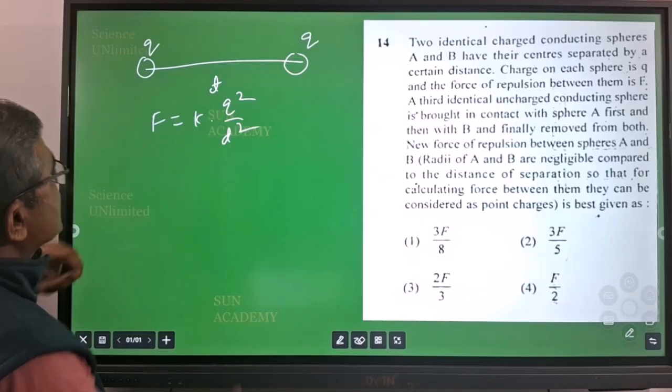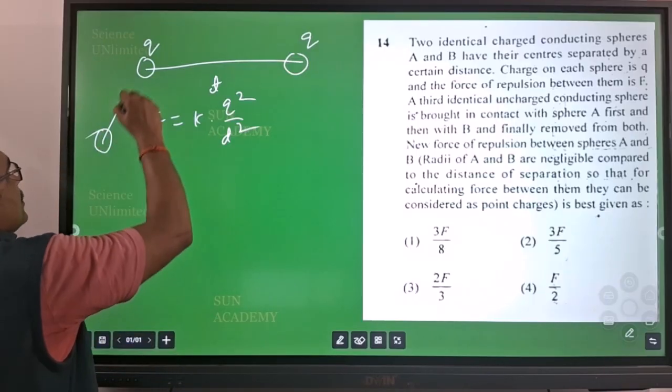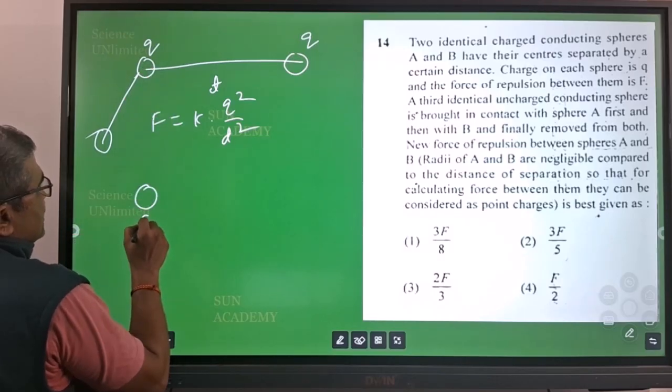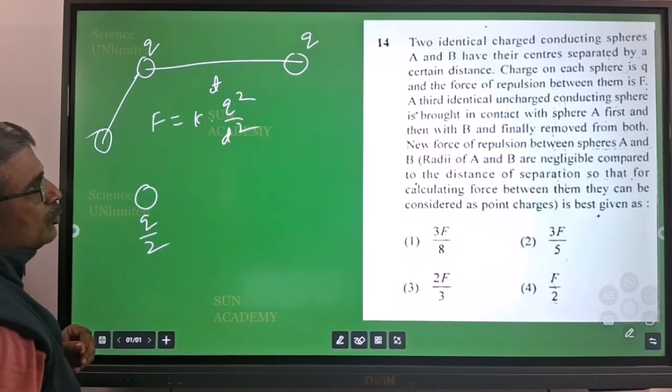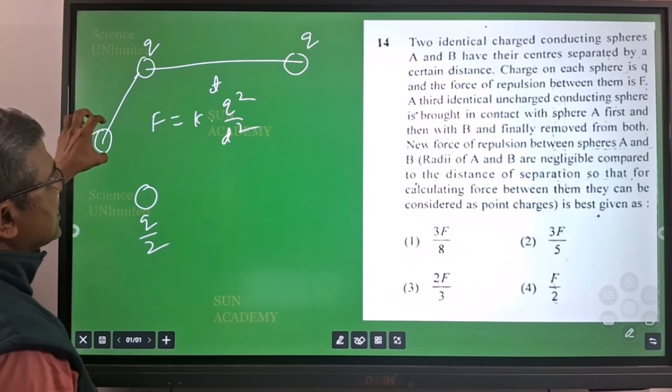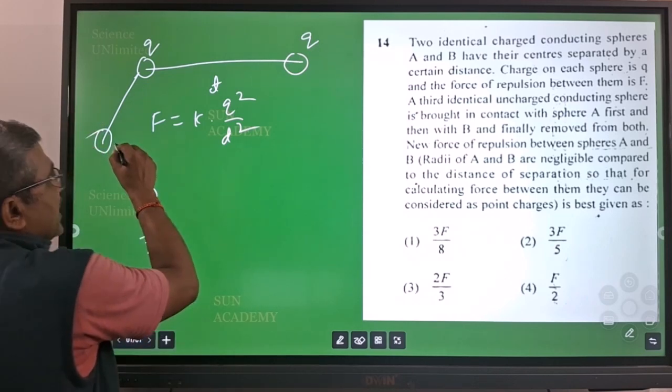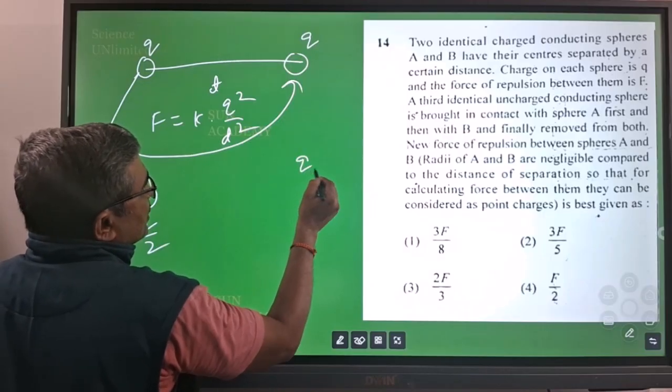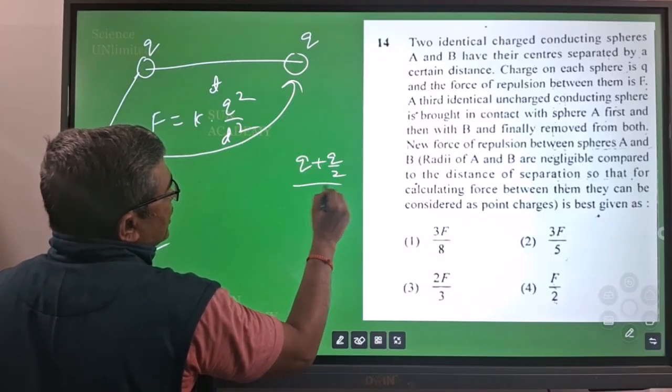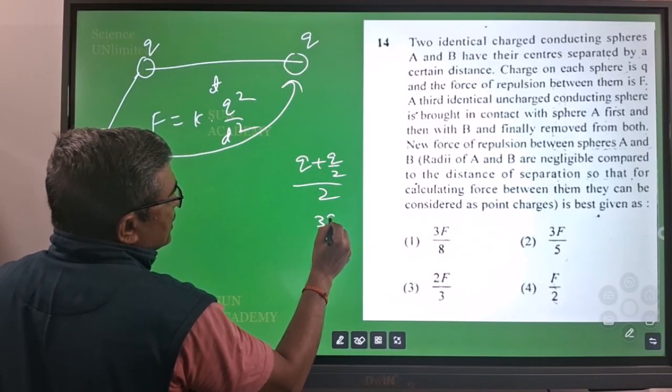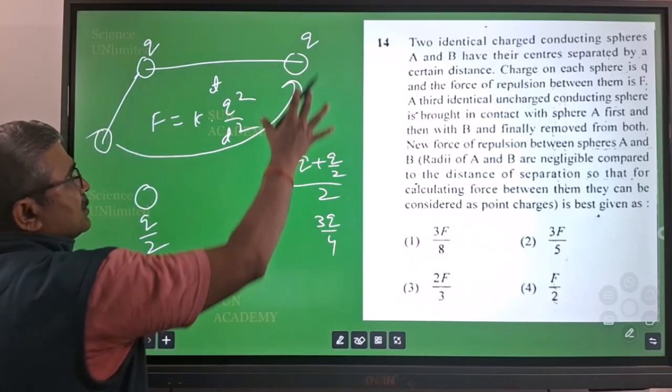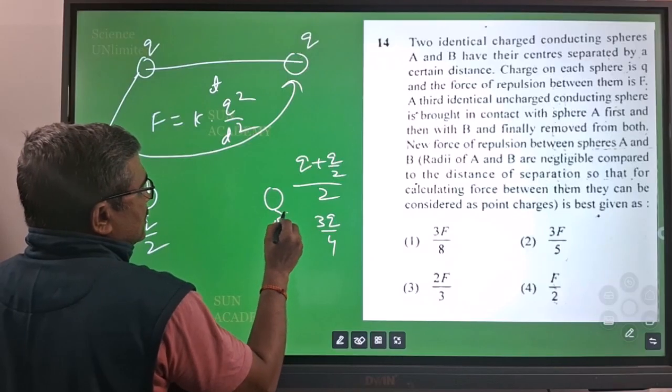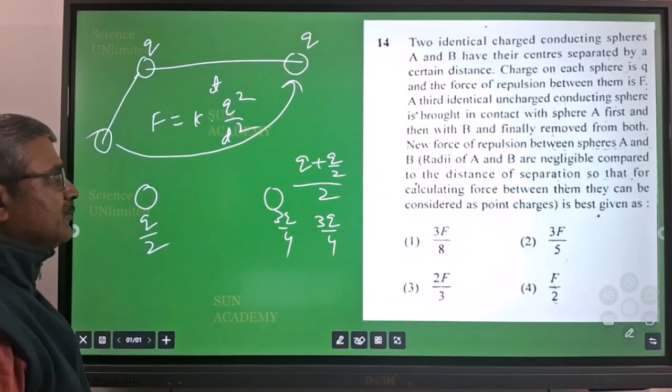Now what they did? They brought one similar kind of object near to the first one. They contacted it, then after contacting, its charge will become q by 2 and the second one's charge will become q by 2. Then again you brought to this second object, so there your charge will be q plus q by 2 by 2, so it is 3q by 4. The charge in the second body will be 3q by 4.